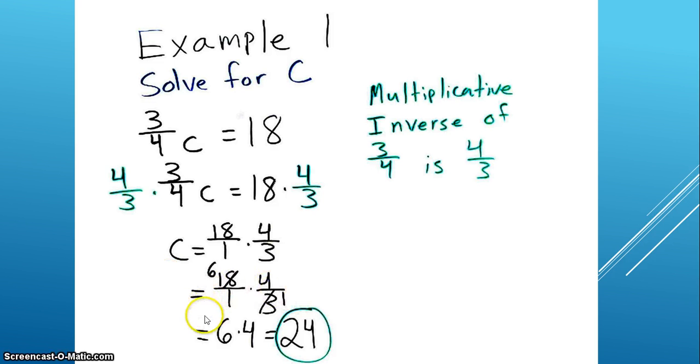And then we get the answer of 24. Really, what we're doing is 18 over 1 times 4 over 3. Because there's an 18 in the numerator and a 3 in the denominator, we can simplify to 6 times 4, which equals 24.